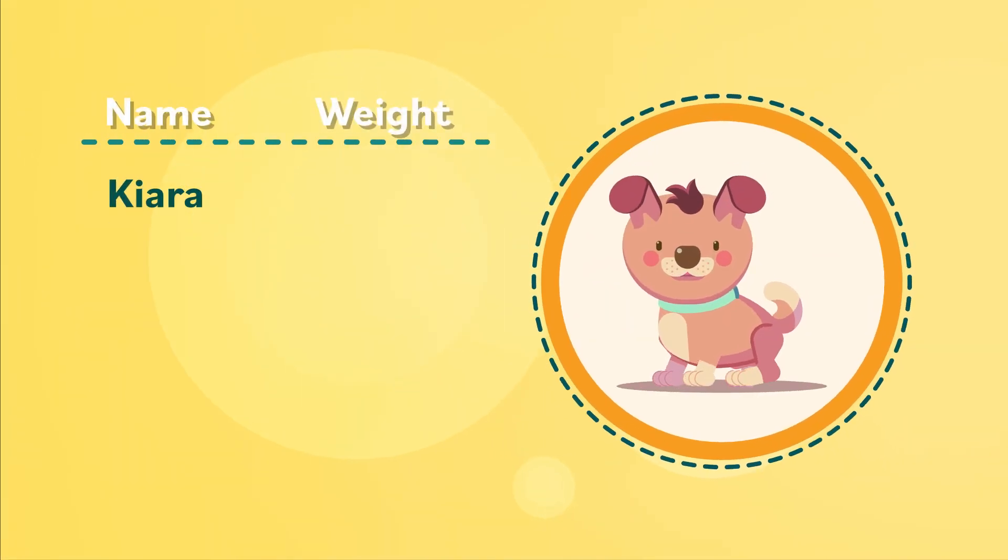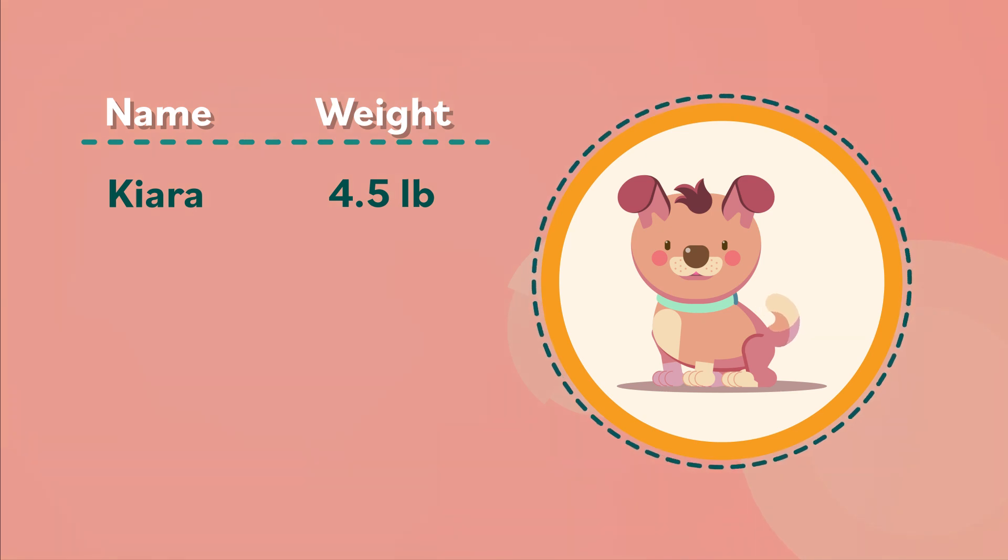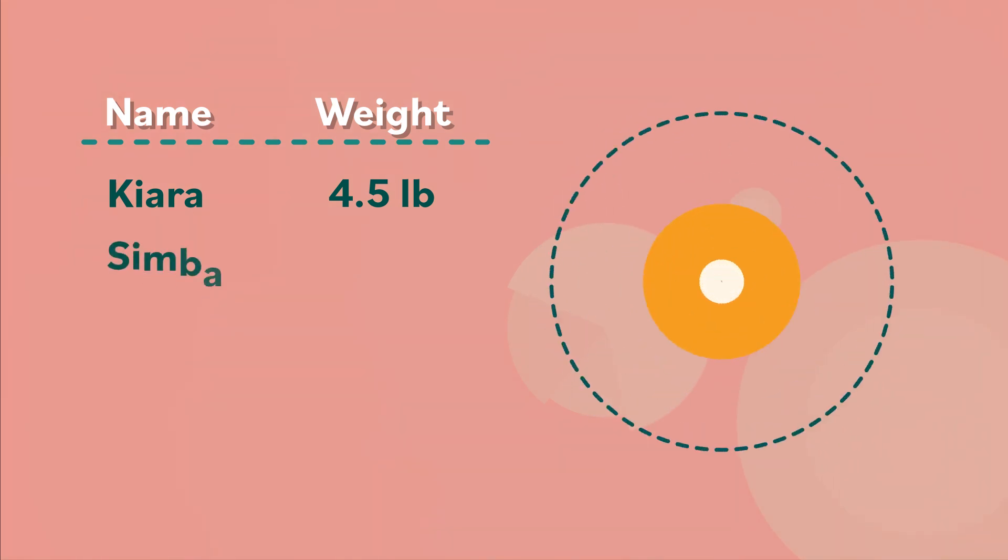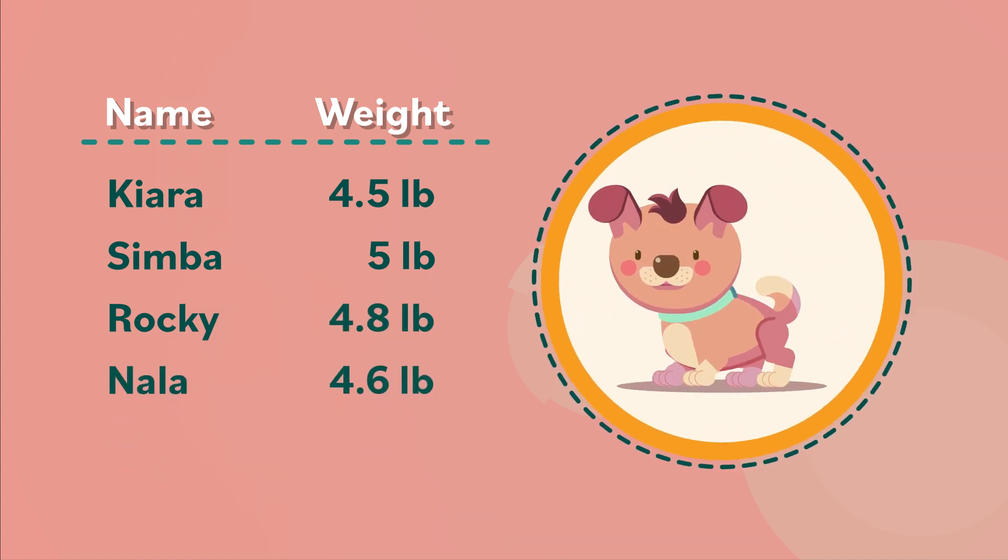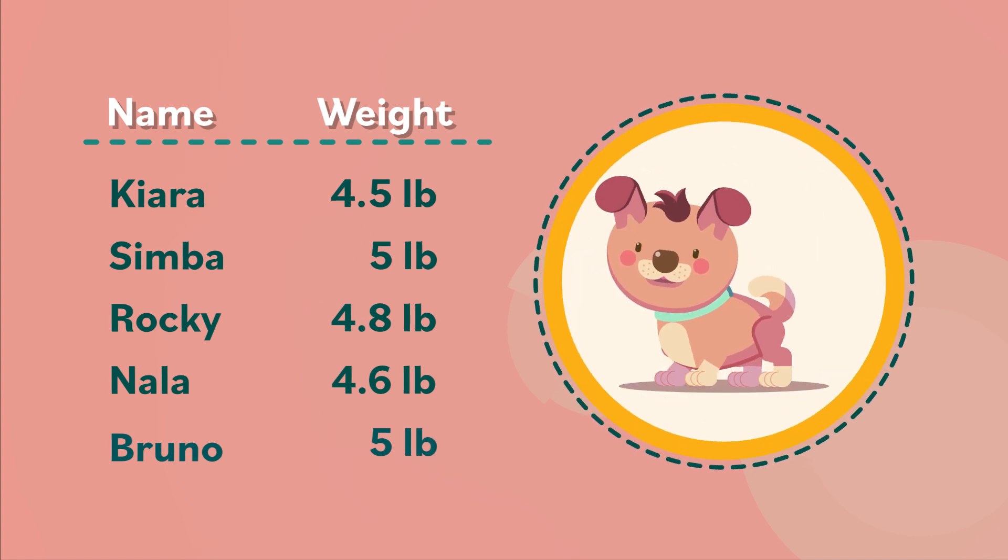Chiara is the smallest of the litter, weighing 4.5 pounds. Then there's Simba, who's 5 pounds. Rocky, 4.8. Nala, 4.6. And Bruno, who's 5.